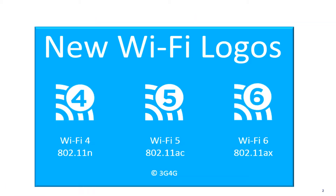So first off, we've got some new logos. In the past, Wi-Fi was referred to as 802.11n, 802.11ac, and up until recently, 802.11ax. But the Wi-Fi committee decided that we needed to rationalize the logos a little bit, so we've now got Wi-Fi 4, Wi-Fi 5, and Wi-Fi 6. Wi-Fi 6 is the new standard, which was up until recently known as 802.11ax.